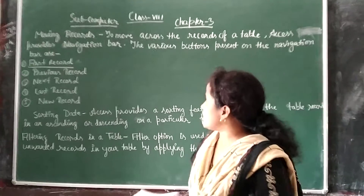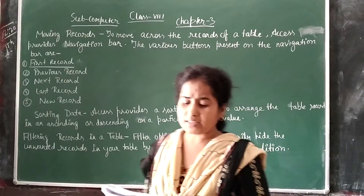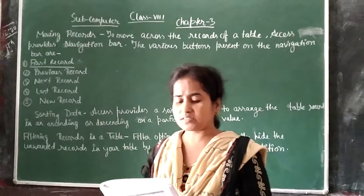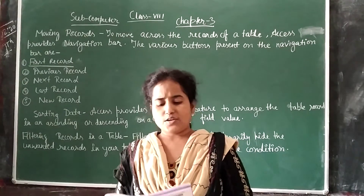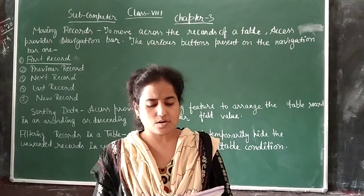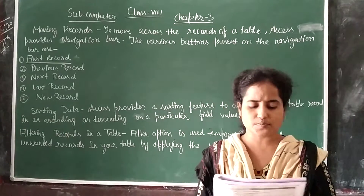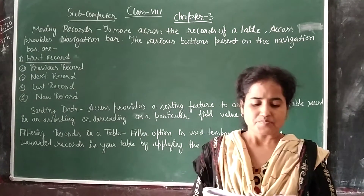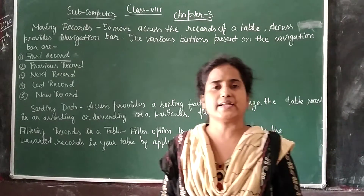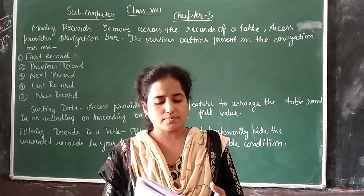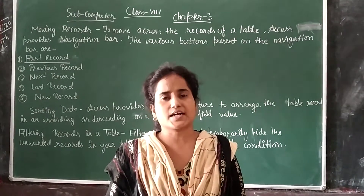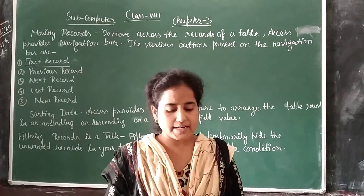You can also search data in a database. To search for a data value, open the datasheet, then enter the text or value to be searched in the search box, and press the Enter key. The value in the first record which matches the search will be highlighted. By following these steps, you can search any data in the database.